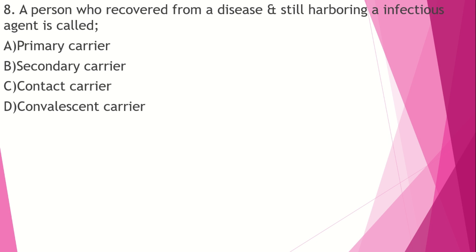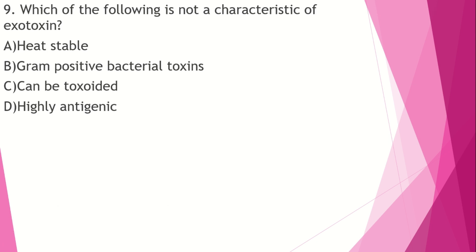The answer is convalescent carrier. The following is not a characteristic of exotoxin: Option A: heat stable. Option B: gram positive bacterial toxins. Option C: can be toxoided. Option D: highly antigenic. Exotoxin is protein in nature. Exotoxins are heat labile — heat stable is a characteristic of endotoxin, not exotoxin.